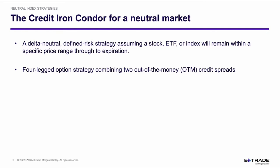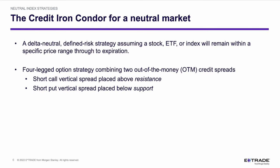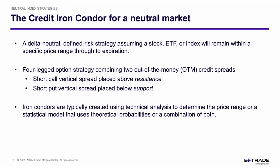Just take a look at the liquidity of those options because there are several legs involved. It is a four-legged option strategy that combines two out-of-the-money credit spreads. One of those credit spreads is a short call vertical spread placed above resistance, and the other is a short put vertical spread placed below support. Iron condors are typically created using technical analysis — the starting point is a chart — or we can use a statistical probability model, or a combination of both.